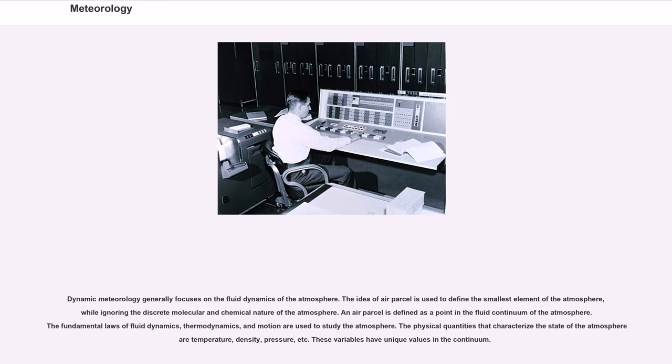Dynamic meteorology generally focuses on the fluid dynamics of the atmosphere. The idea of air parcel is used to define the smallest element of the atmosphere, while ignoring the discrete molecular and chemical nature of the atmosphere. The fundamental laws of fluid dynamics, thermodynamics, and motion are used to study the atmosphere. The physical quantities that characterize the state of the atmosphere are temperature, density, pressure, etc.